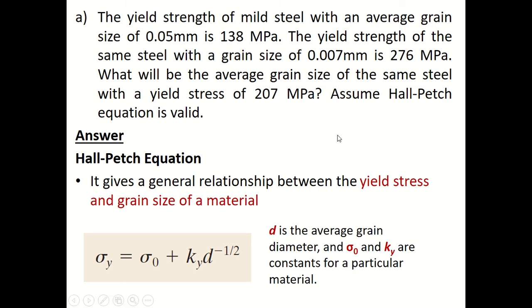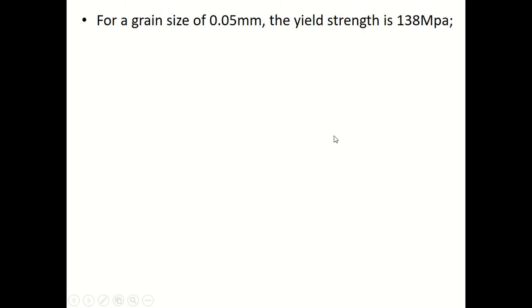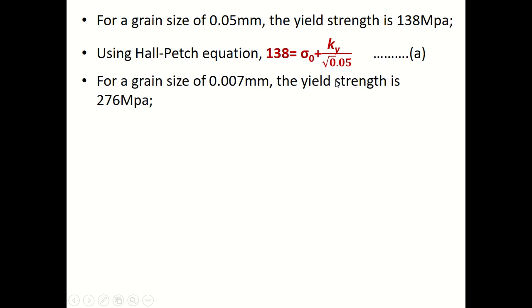For a grain size of 0.05 mm, the yield strength is 138 MPa, so using Hall-Petch equation: 138 equals sigma o plus ky by root 0.05. For grain size of 0.007 mm, the yield strength is 276 MPa, so 276 equals sigma o plus ky by root 0.007.